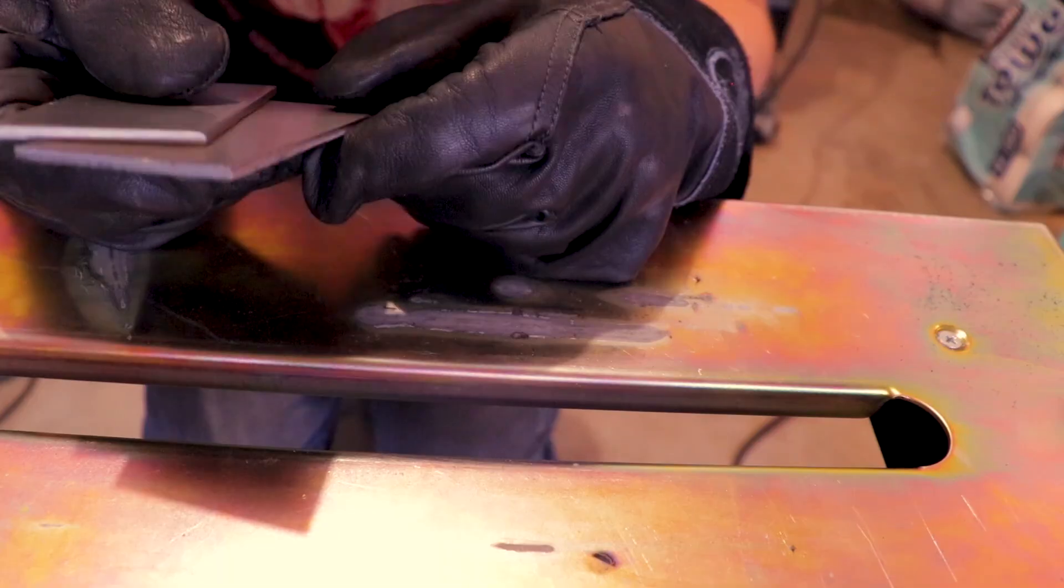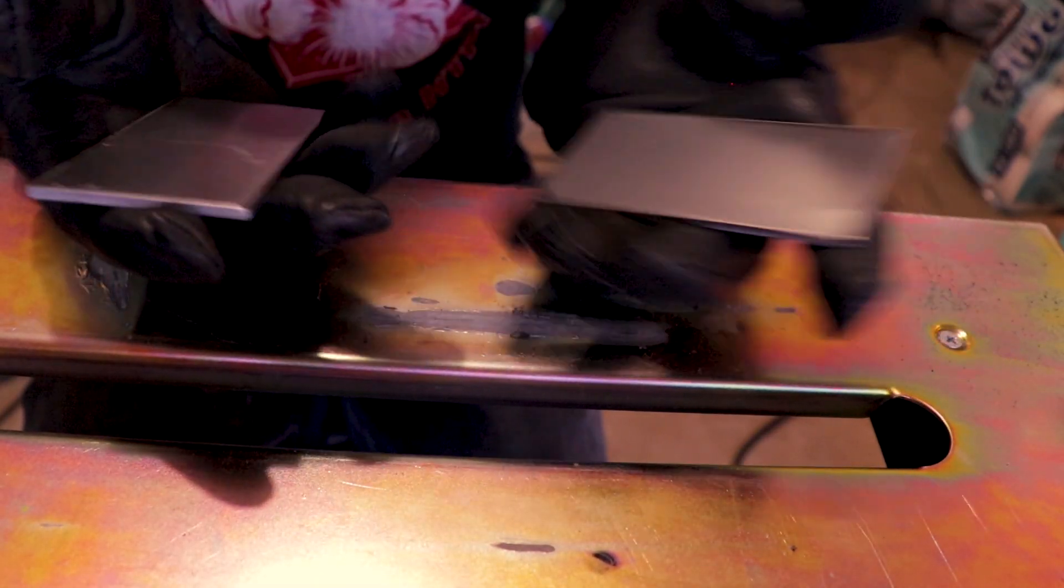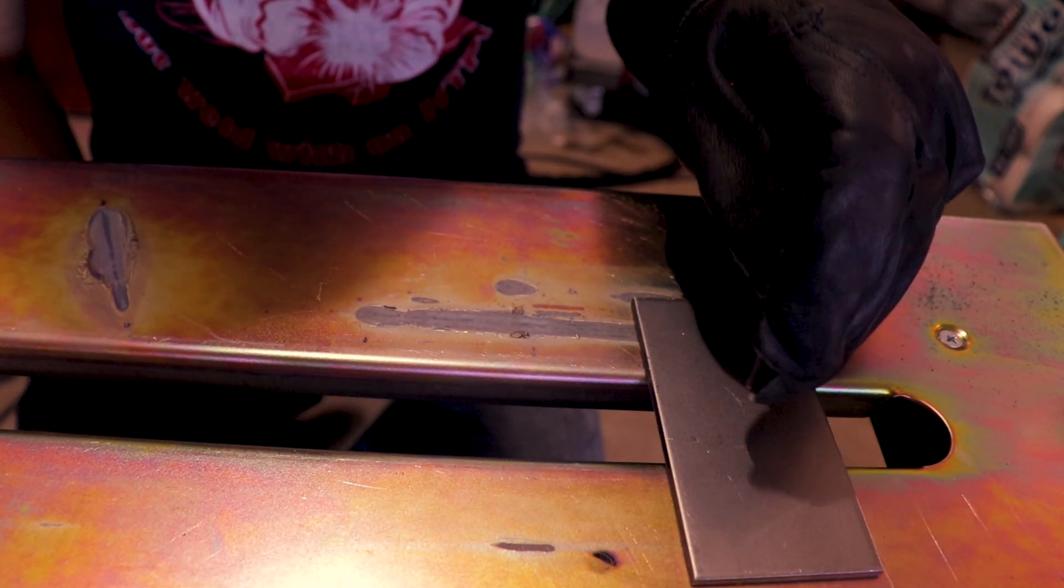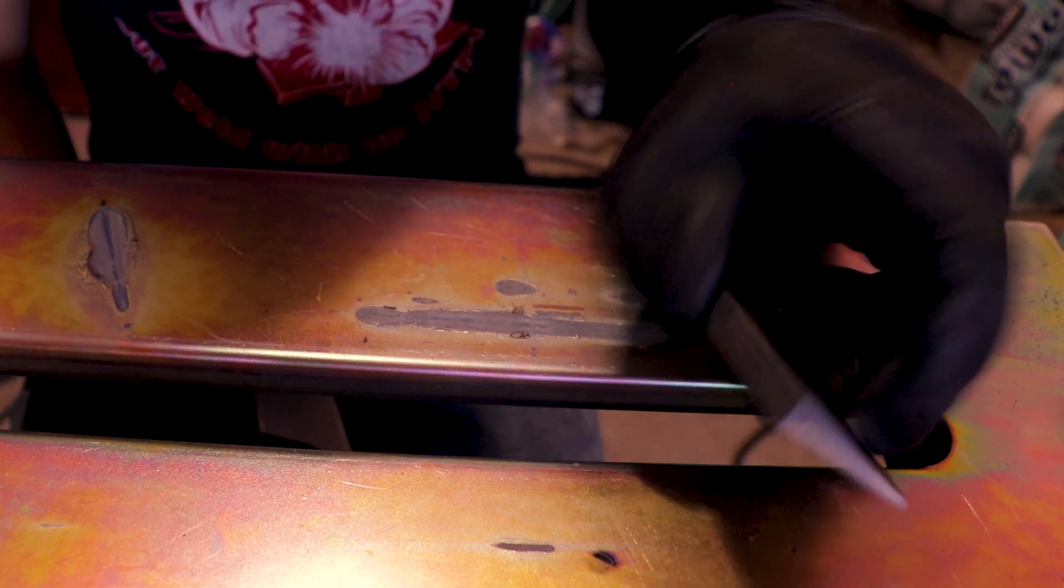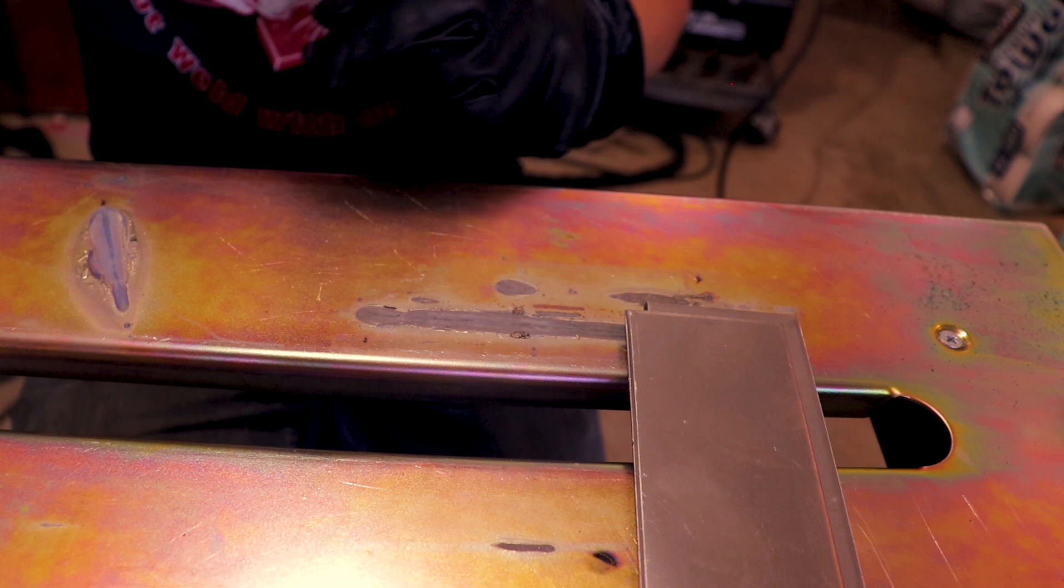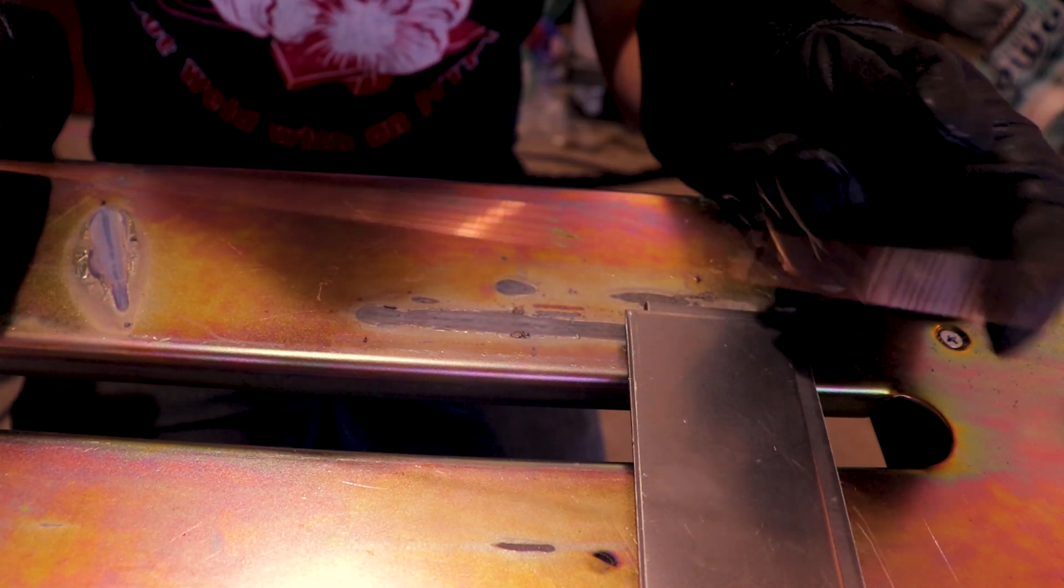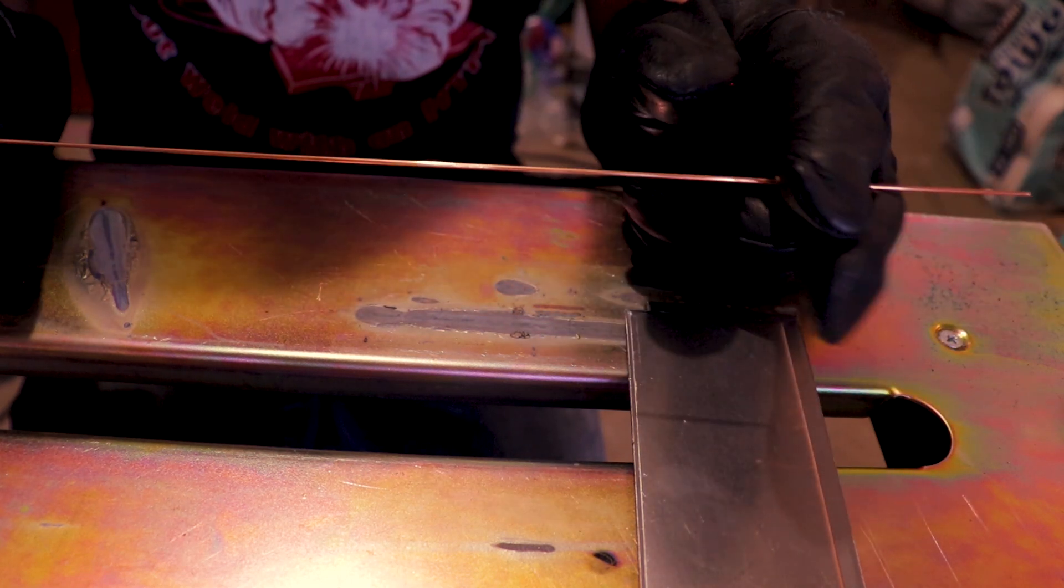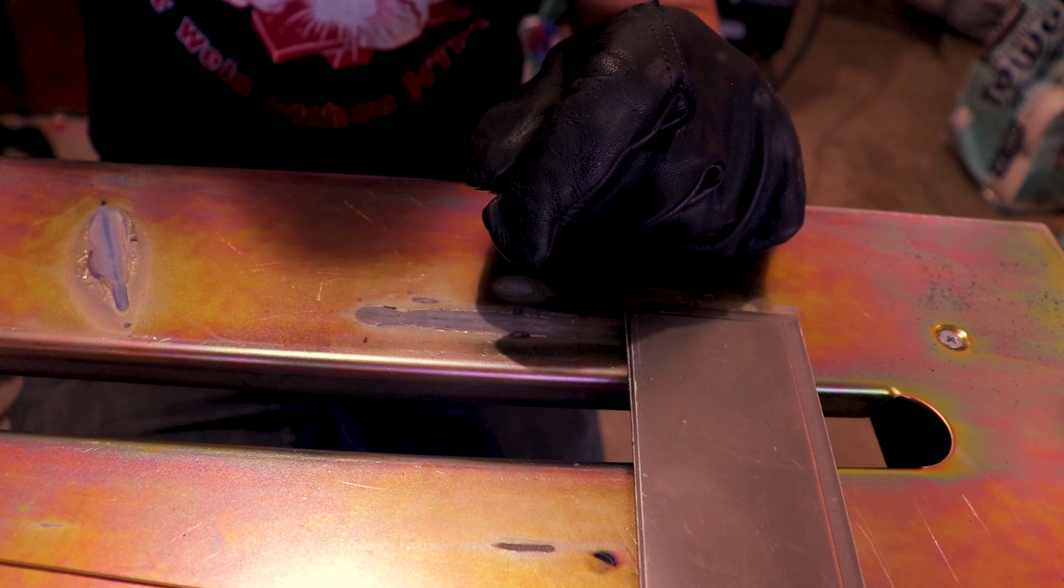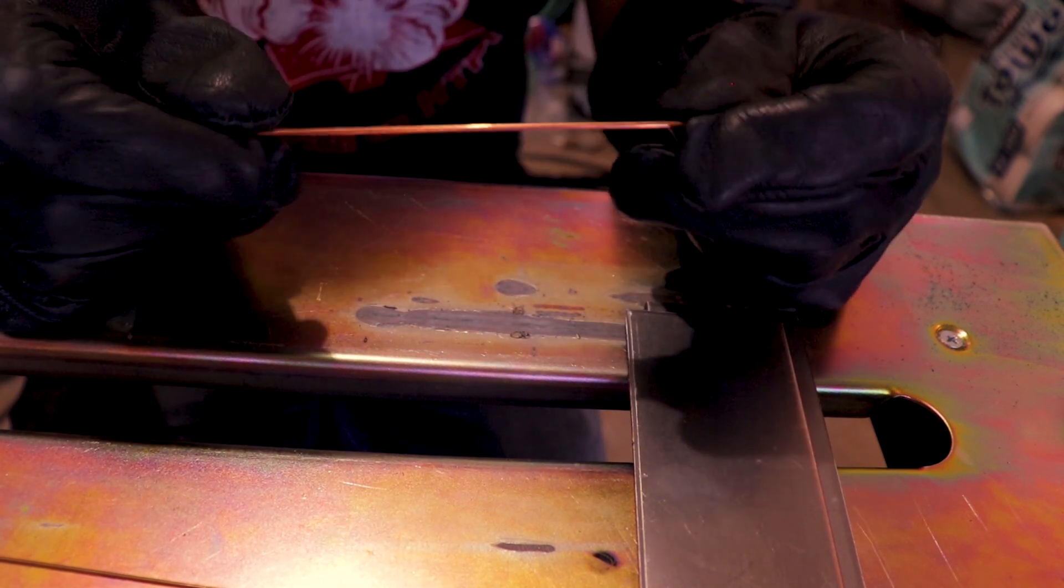In this video we're going to be using some welding coupons from Weld Metals Online. These are cold rolled steel, eighth inch thick. We're going to be using their filler metal. We're going to be starting out with 0.045 thick ER70S-2 filler wire.